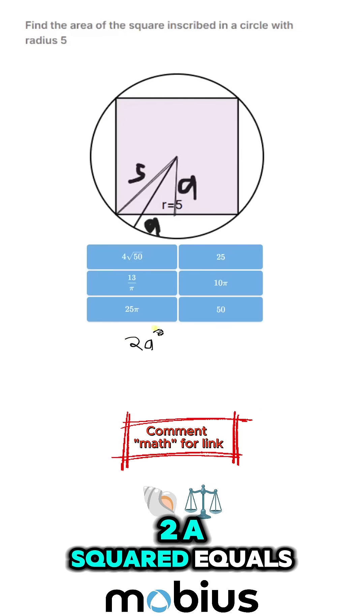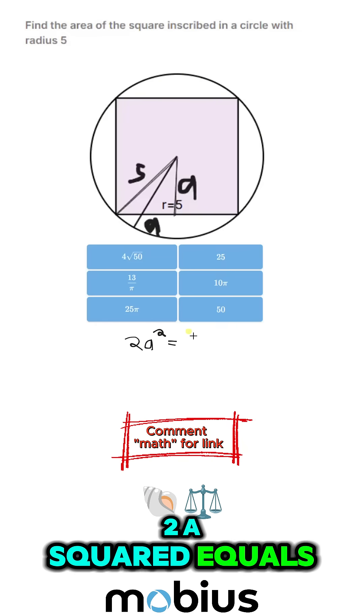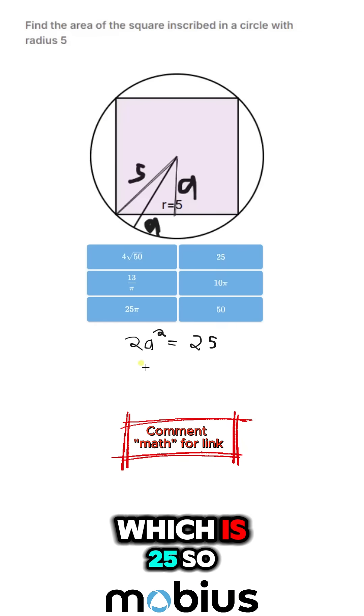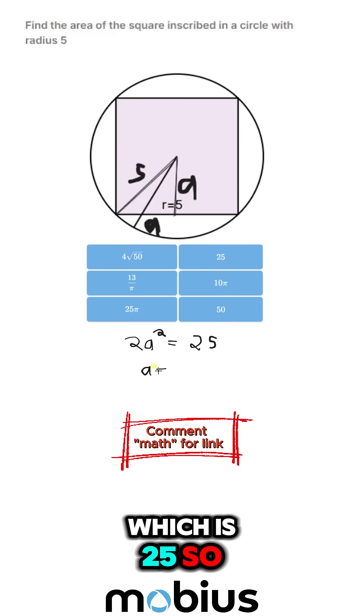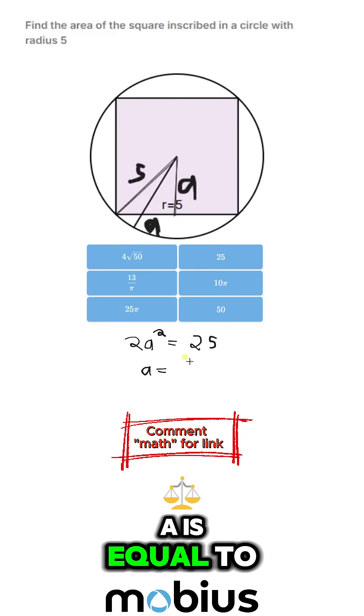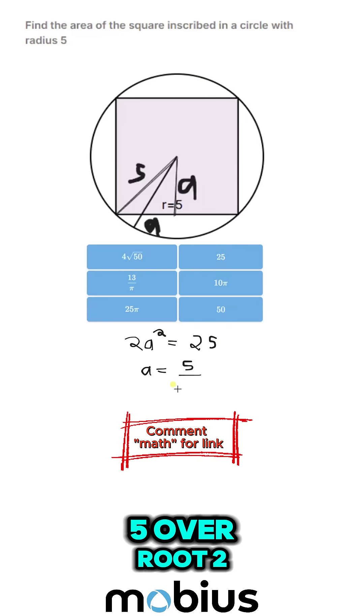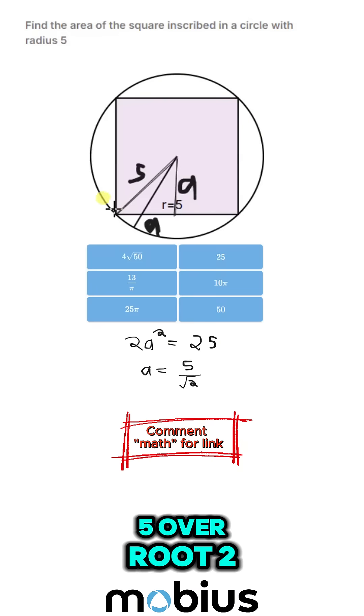So 2A squared equals 5 squared, which is 25. So A is equal to 5 over root 2.